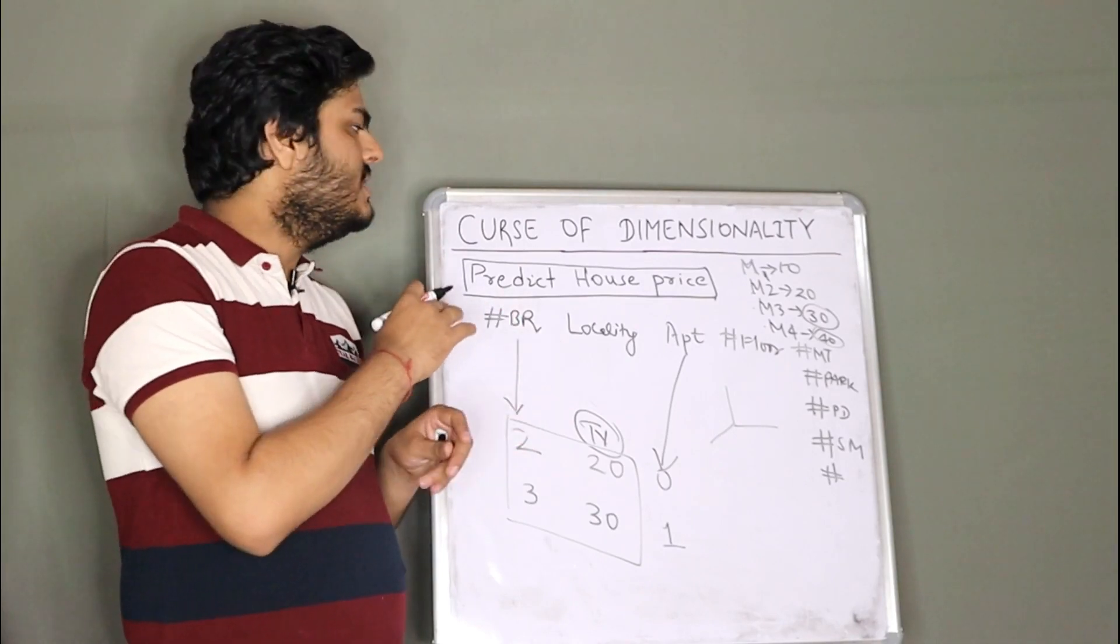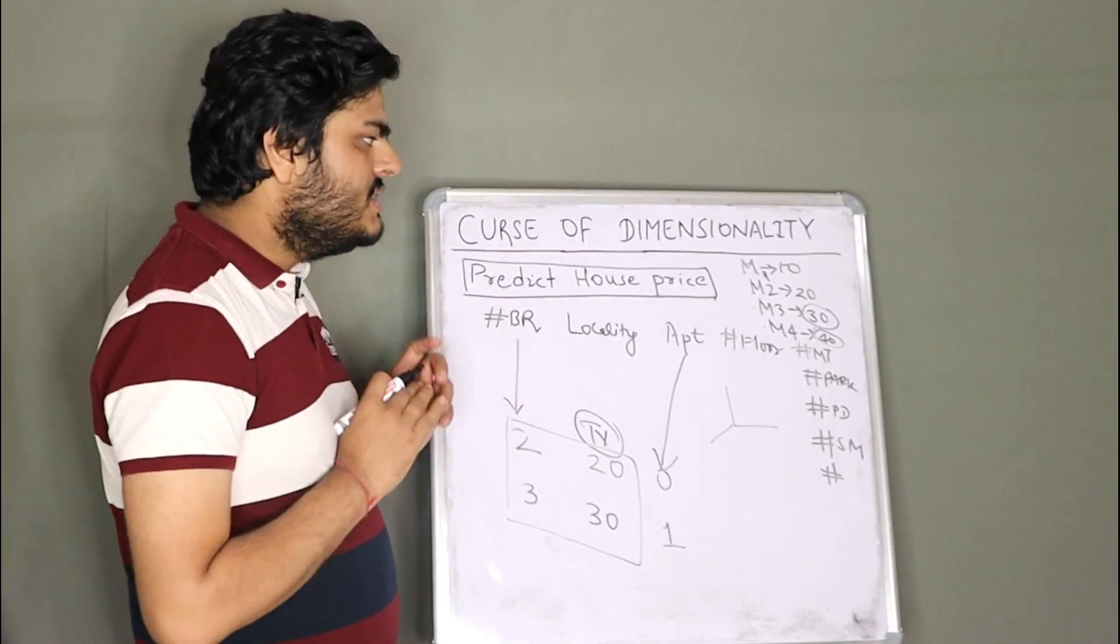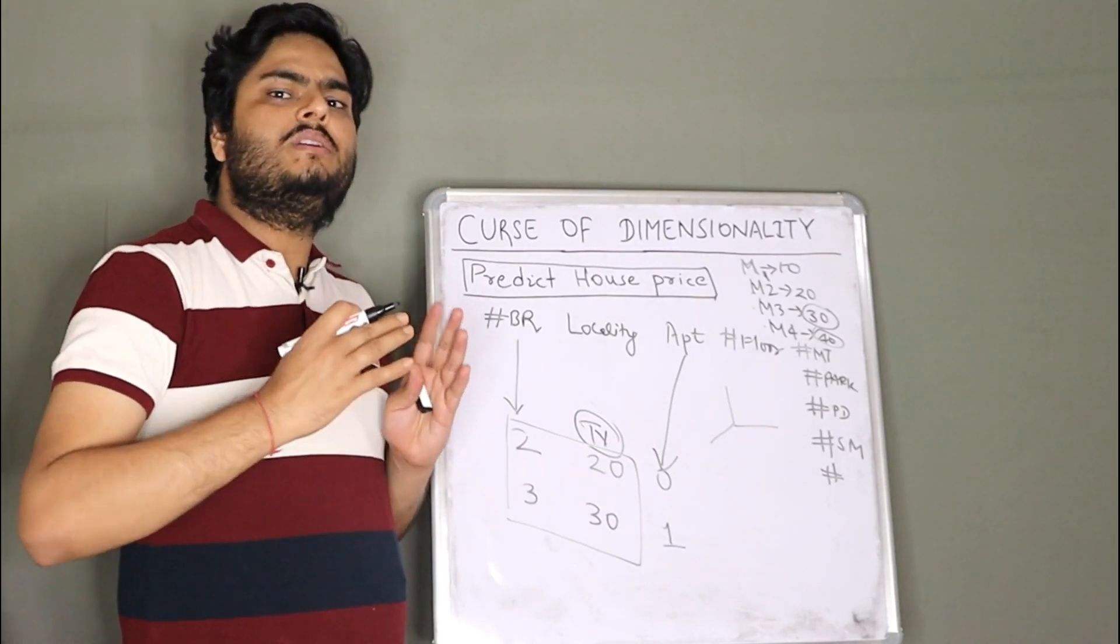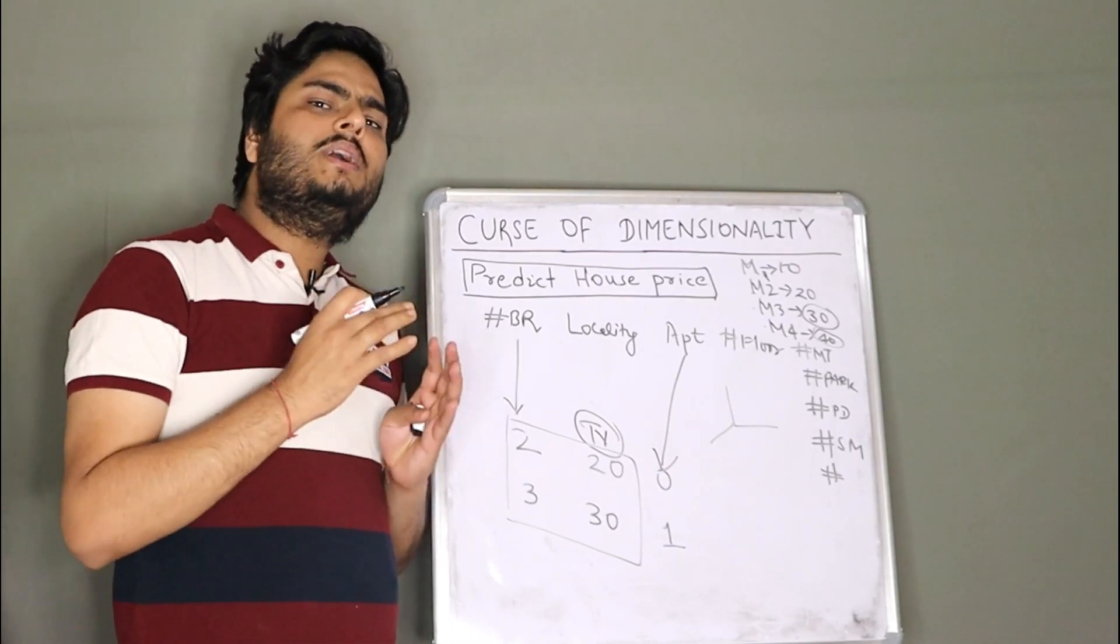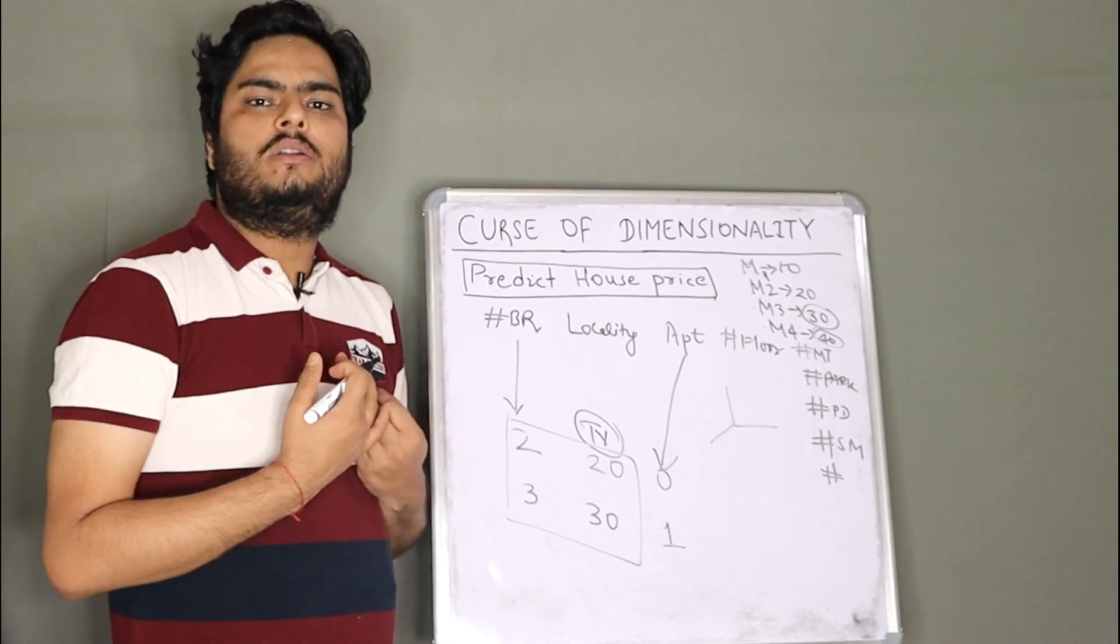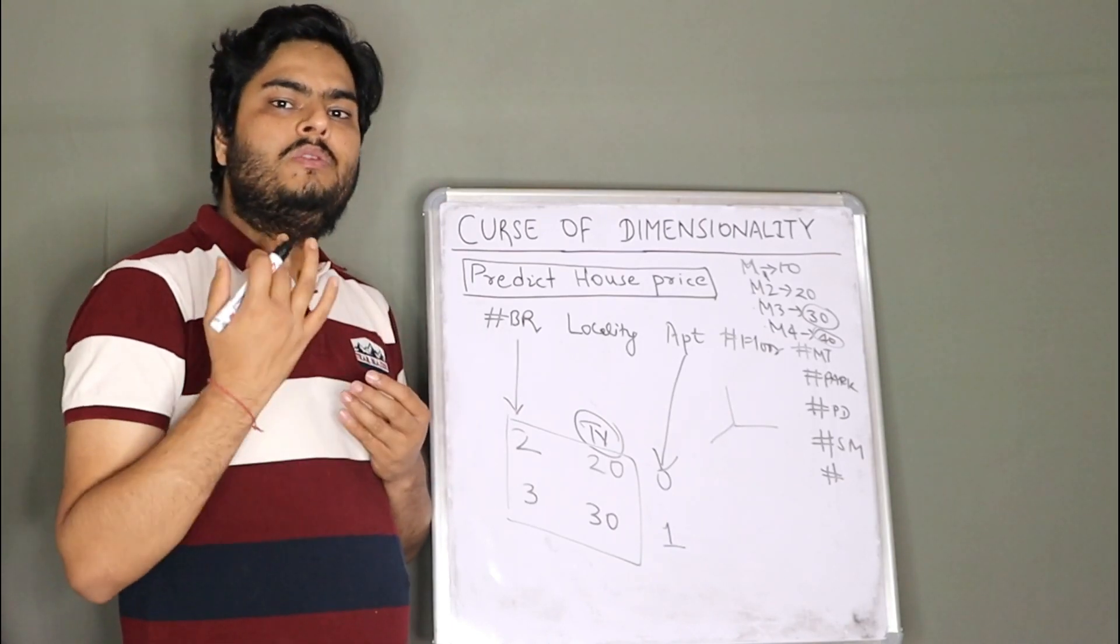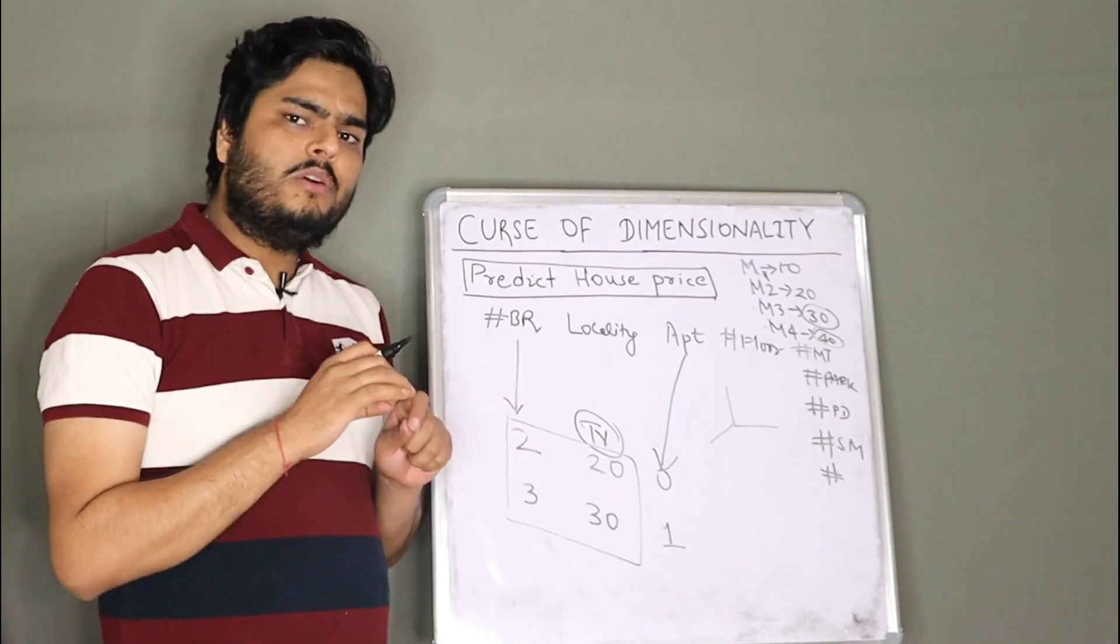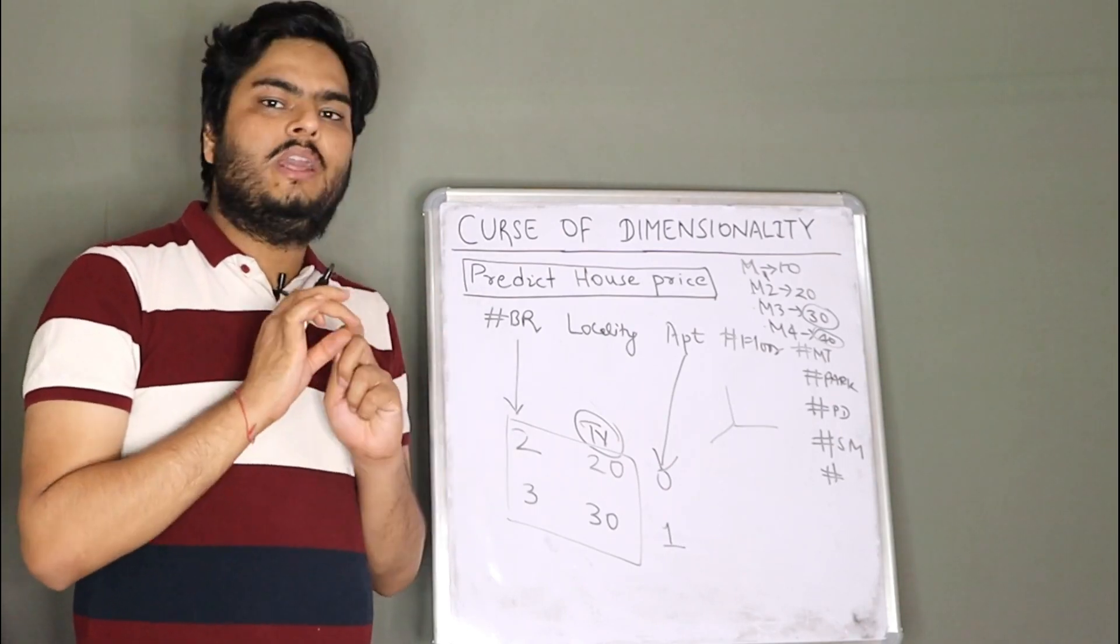So this is how curse of dimensionality works guys in real world. Why this topic is important is in real world you will have many, many data sets where you will have many features. Suppose tomorrow you start working in a project, you will collect as much as features you want because we don't know which features are more important, which are less important, right? So we collect many features, but end of it, we have to reduce it and bring it to a level which makes sense for the learning.